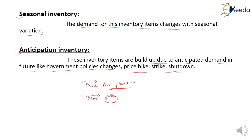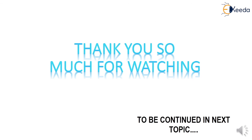So, what is anticipation inventory? Clear to all. There are four types of inventory: first is transit or pipeline inventory, second is buffer or safety stock inventory, third is seasonal inventory, and fourth is anticipation inventory. Thank you so much for watching. To be continued in the next topic, where we will discuss the inventory review system and types of models.